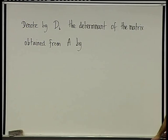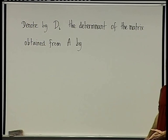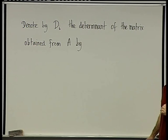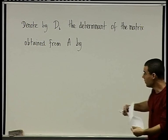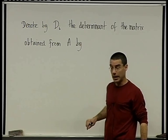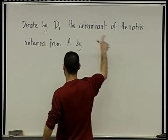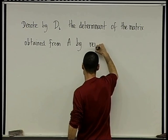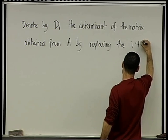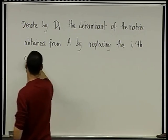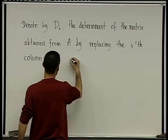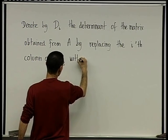From A by, I'm going to take A, A is an n by n matrix, I'm going to cross out its i-th column, and instead I'm going to write there the vector B, the solution vector. Replace the i-th column of A with B, the solution vector. Take the determinant of that, that's going to be di. So the determinant of the matrix obtained from A by replacing the i-th column of A with B.